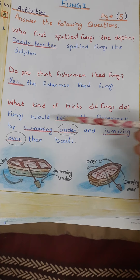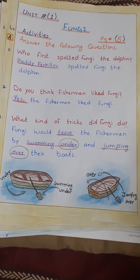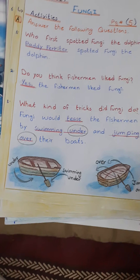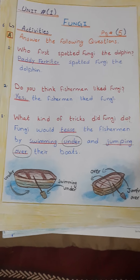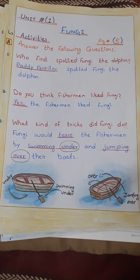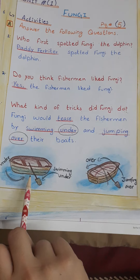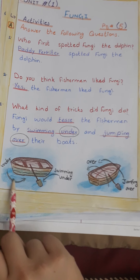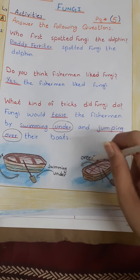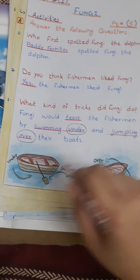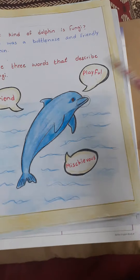There are two important words here — 'under' and 'over' — both are prepositions. In grammar, these words are called prepositions. A preposition is a word which shows the position of a noun. Here, Fungi the dolphin swims 'under' — meaning beneath — the boat, and jumps 'over' — meaning above — the boat. These were the two tricks that Fungi usually did.